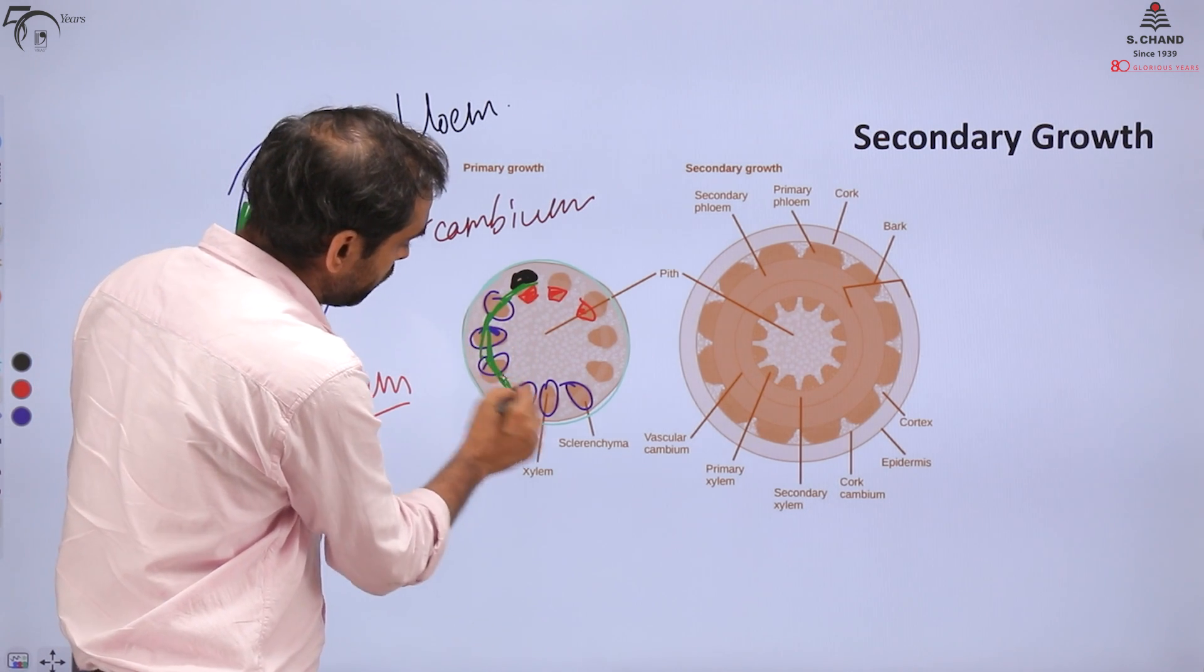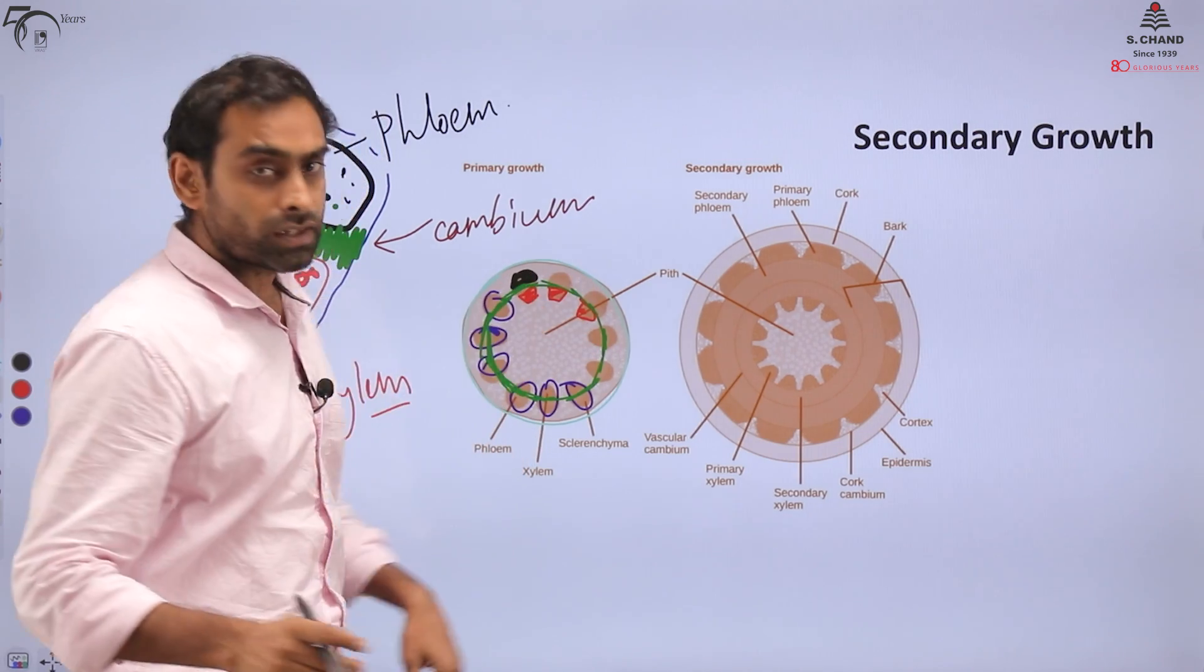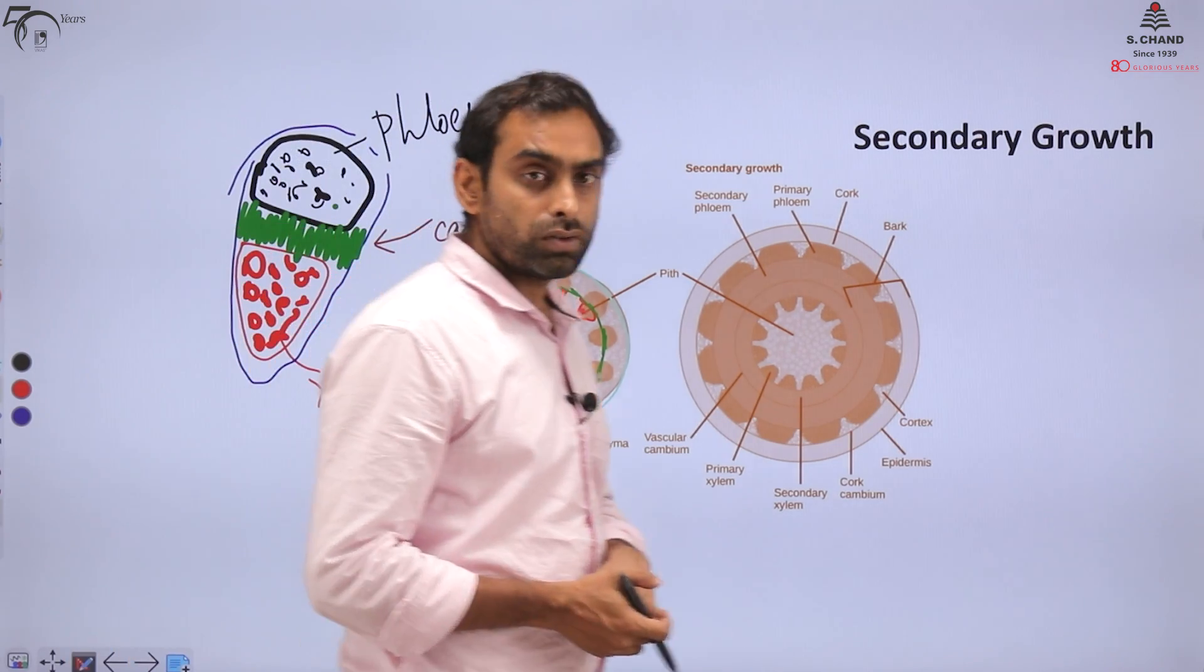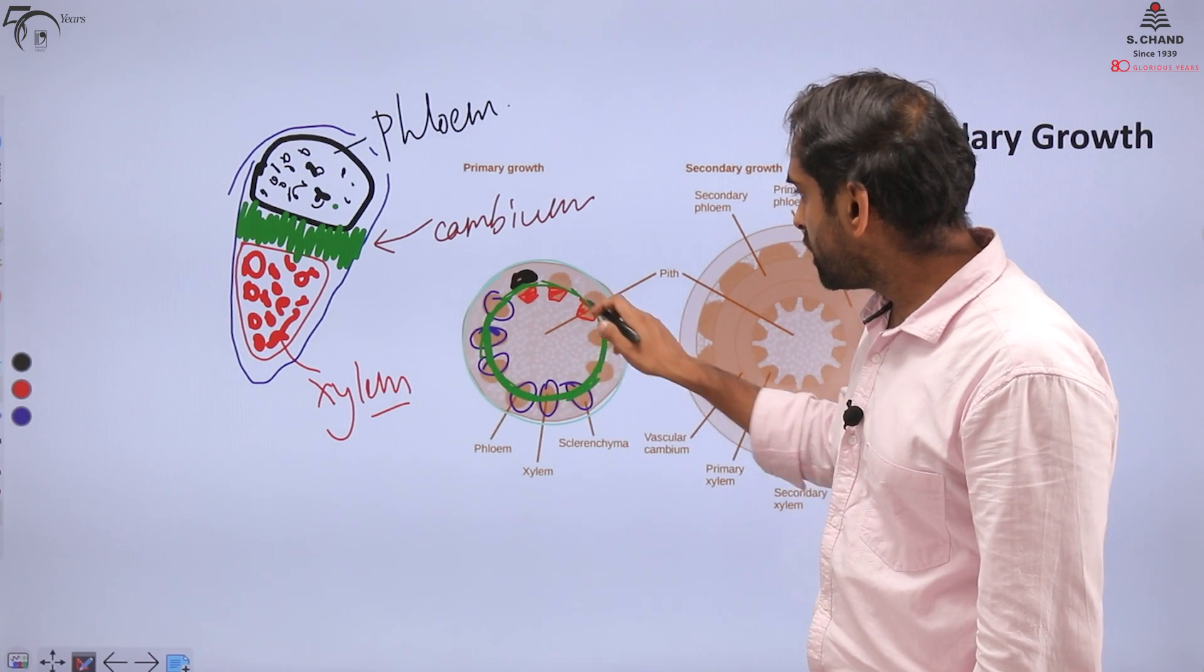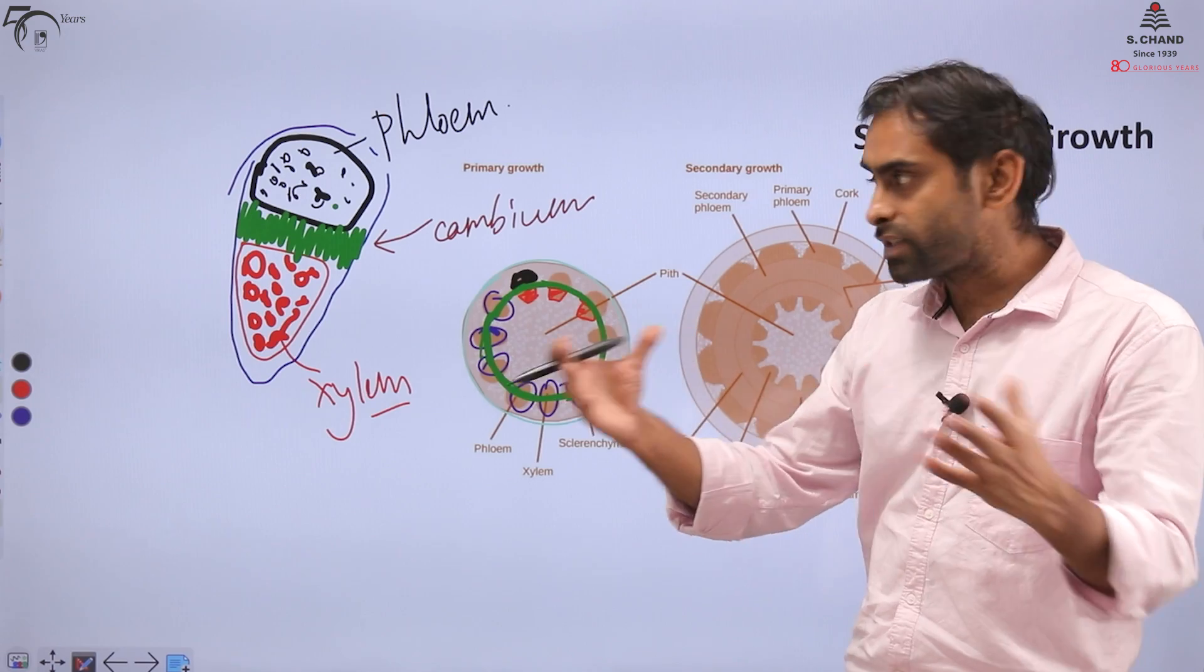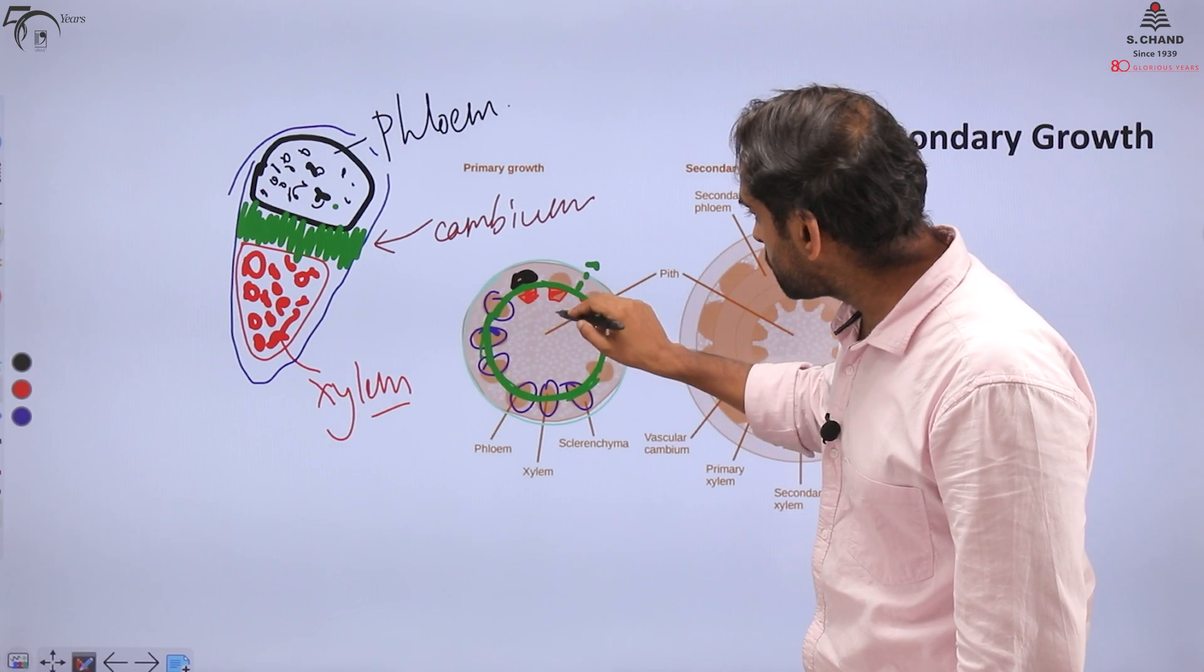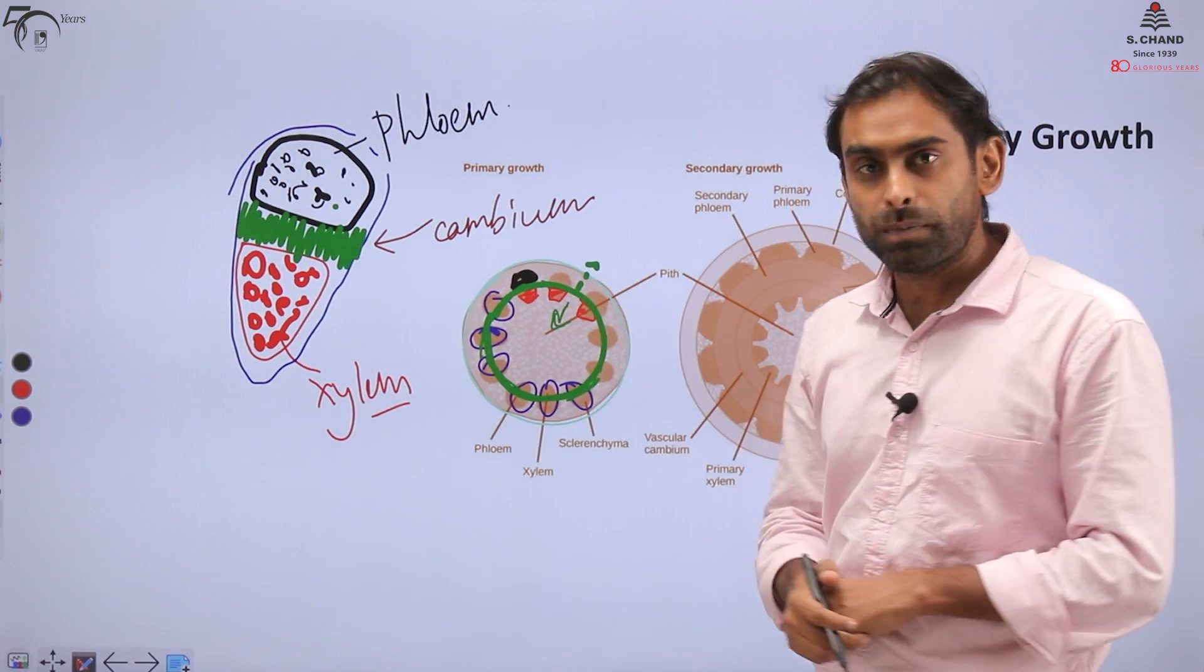Initially when the plant has just germinated, there will be only one layer of cambium. Let me make a complete ring of cambium. On both sides you can see xylem and phloem. But what will happen when it grows? Secondary growth will be promoted by this cambium. Cambium cells will slowly divide, and because of cell division, this will expand on either side.